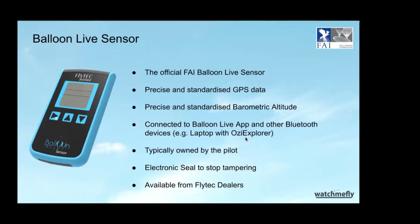However, the thing about mobile phones is every phone has a different GPS sensor. From a competition perspective we needed a way to standardize the data being captured. That's what the Balloon Live sensor was developed for — a small device, slightly smaller than a mobile phone, containing a GPS and a barometric altimeter. If you've got a hundred balloons using a hundred different mobile phones, you're going to get a lot of discrepancy in data quality — people with old phones, new phones, all sorts.